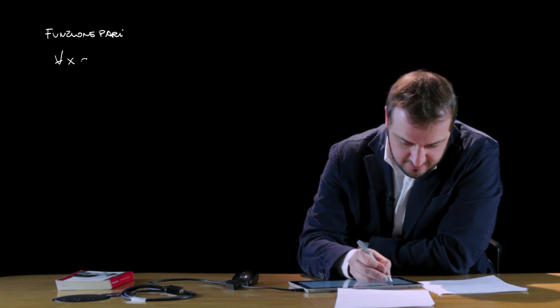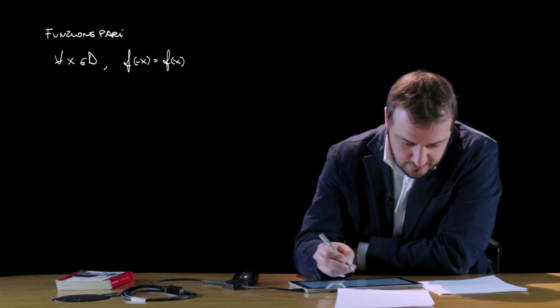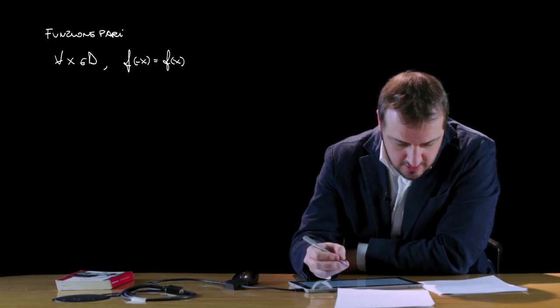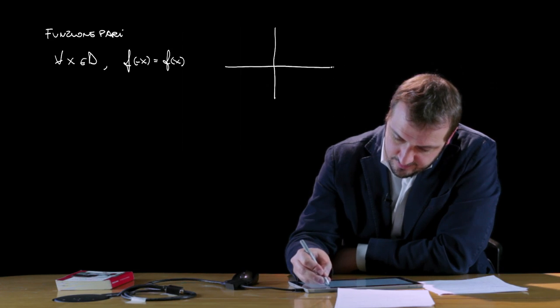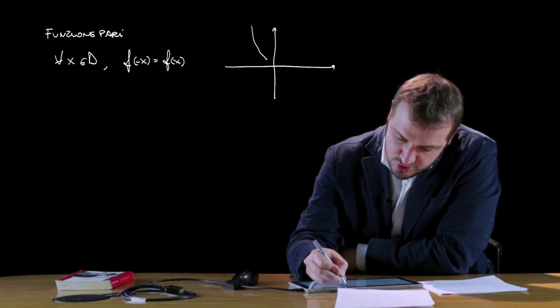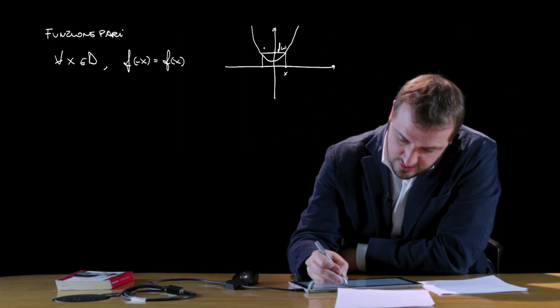Vediamo ora alcune delle definizioni più importanti associabili alle funzioni. Una funzione f di dominio D si dice pari se per ogni x appartenente al dominio abbiamo che f(-x) = f(x). In questo caso il grafico della funzione risulta essere simmetrico rispetto all'asse delle y. Un tipico esempio è una funzione parabolica con asse di simmetria coincidente con l'asse delle y, in cui f(x) coincide con f(-x).